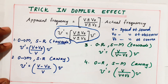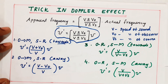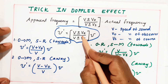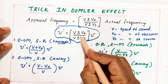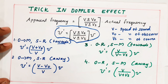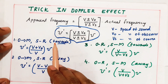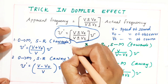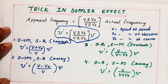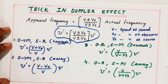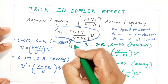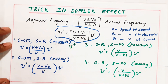Two things to remember: source is at rest means the V_S term is not in the denominator. And towards means the apparent frequency should increase — so we get a plus sign. If it is towards, frequency should increase, meaning the apparent frequency increases.